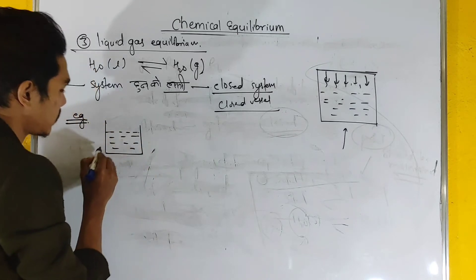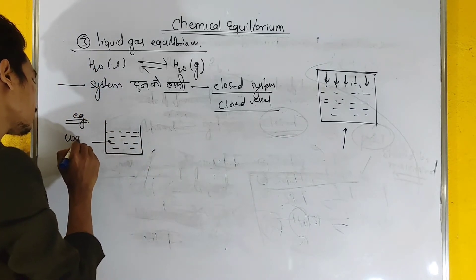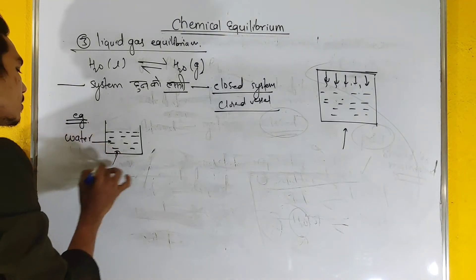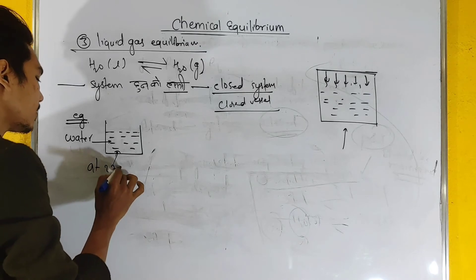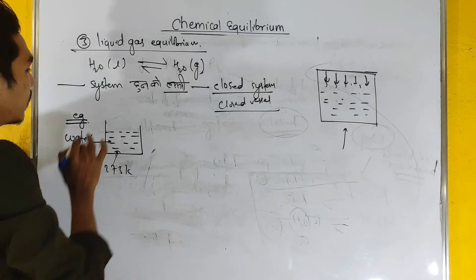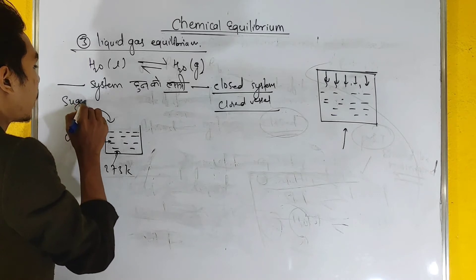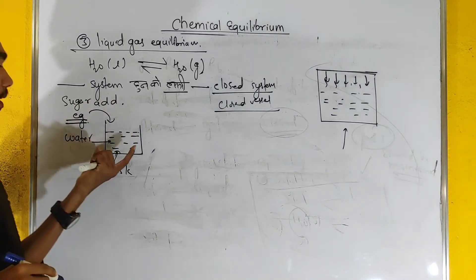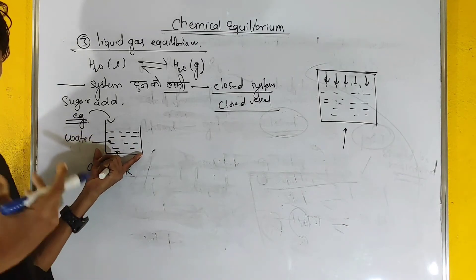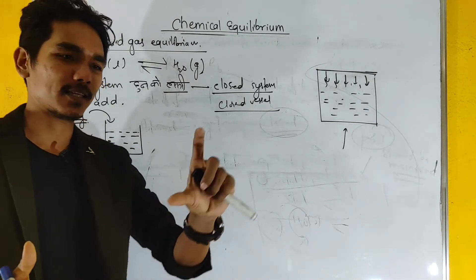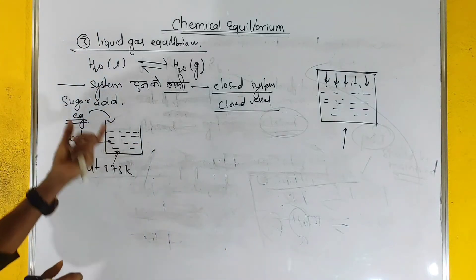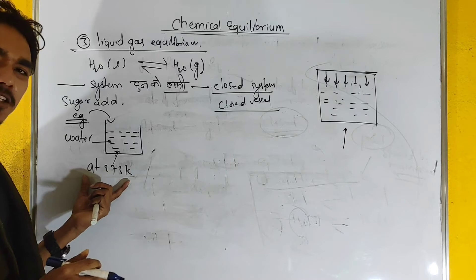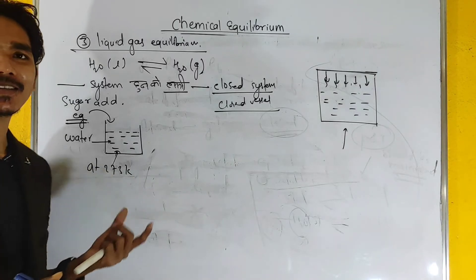Consider water in a container at 273 Kelvin temperature. At 273 Kelvin, the system reaches a specific equilibrium condition.